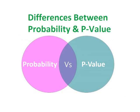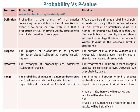Differences between probability and p-value. Probability is the branch of mathematics concerning numerical descriptions of how likely an event is to occur, or how likely it is that a proportion is true. In simple words, probability is how likely something is to happen.